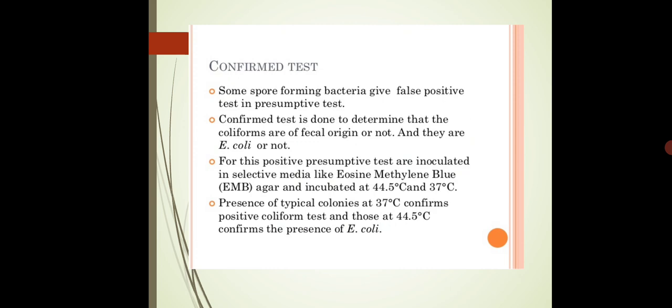In this lecture we are going to discuss whether coliforms are present in our water sample or not — coliforms and which coliforms, also fecal coliforms. We have already discussed about fecal coliforms, and the example of fecal coliforms is the well-known E. coli. Coliforms are non-spore forming bacteria, but some spore-forming bacteria present in the water sample may give false positive results.